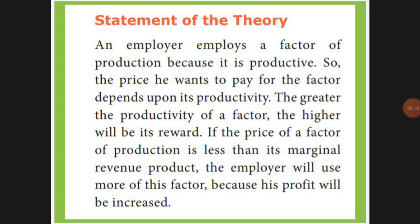The statement of the theory: if you are producing more, you will earn more income. If you earn more income, and you are doing additional production, there will be additional expenses too. Suppose your revenue is more and you see more profit, you will be attracted to that profit and will start producing more. If expenses are less and income is more, you will be attracted to see the profit.